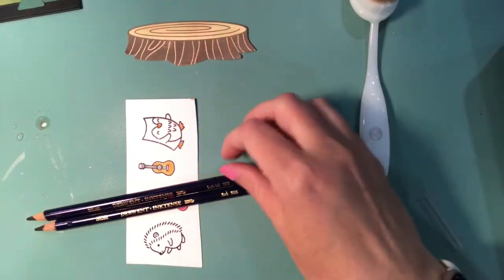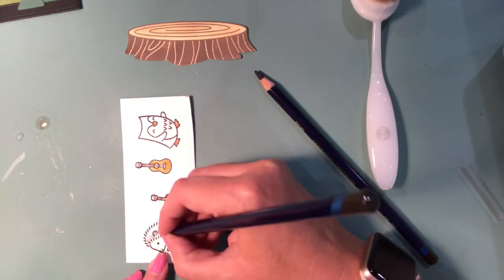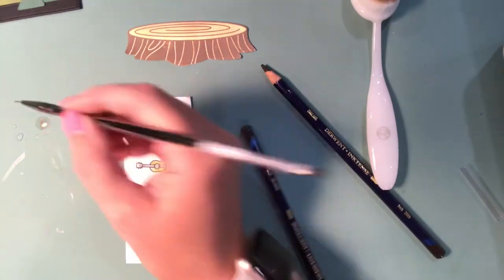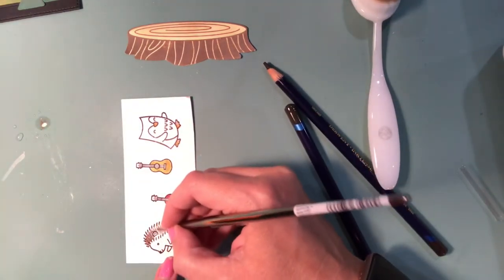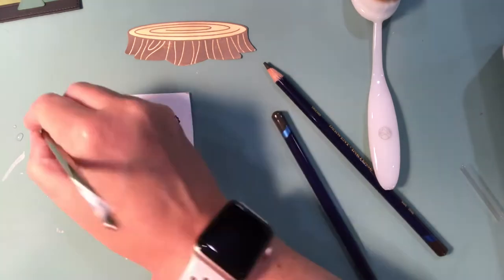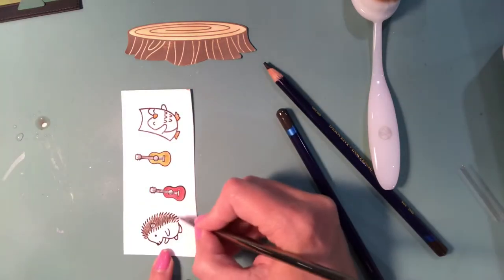After that, we're going to be using my Derwent Inktense watercolor pencils to color in these images. I didn't leave a lot of the coloring in because you guys have seen me color in other videos, plus this video was super long, so I'm just really showing you the porcupine, how I decided to pull the colors out from this and leave a little bit of texture in there.